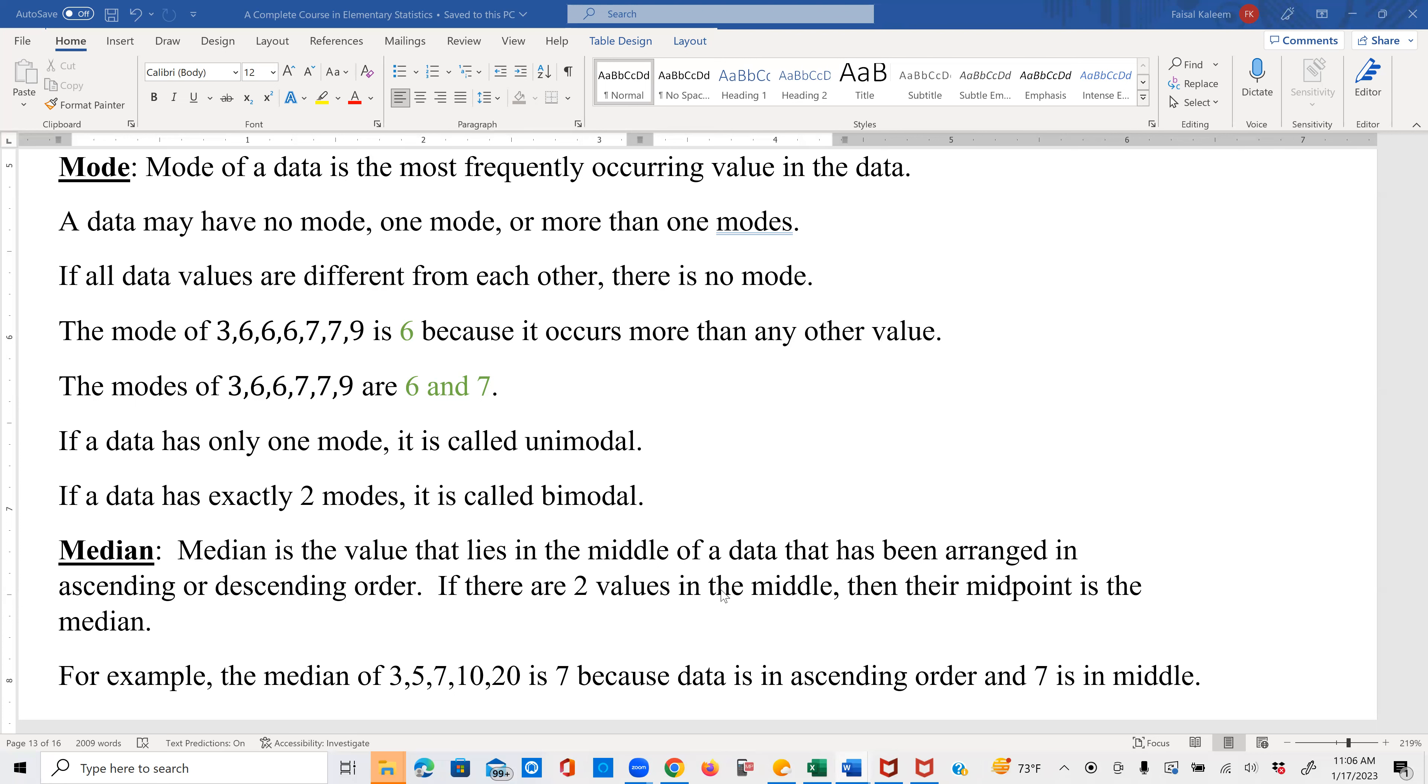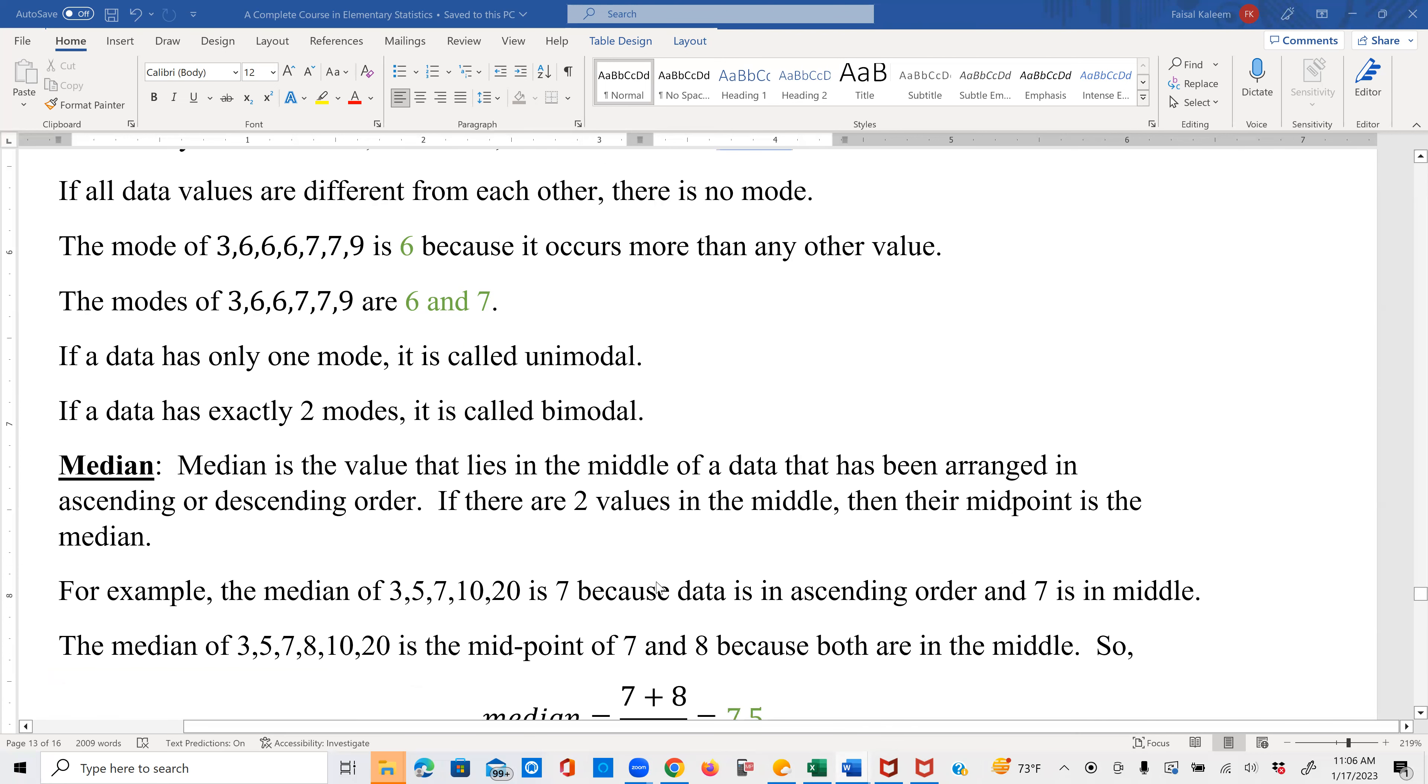If there are two values in the middle after you have arranged it in ascending or descending order, then the midpoint of those two values is the median. For example, if you have 3, 5, 7, 10, 20, you can clearly see that 7 is in the middle. We have two values on the left of it, two values on the right of it. So 7 is in the middle. Therefore, 7 is the median for this data.